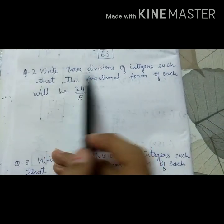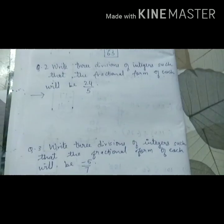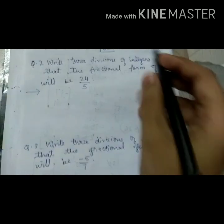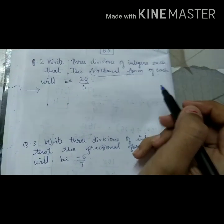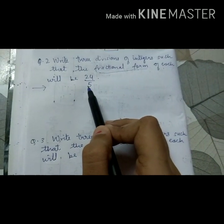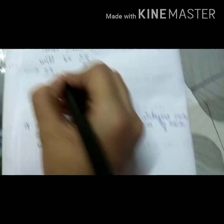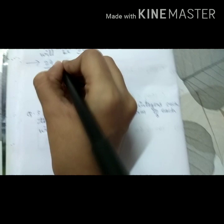Question number 2. Write 3 divisions of integers such that the fractional form of each will be 24 upon 5. Now, question is very big. Keep in mind this word fractional form of each will be 24 upon 5. Means whatever number we are selecting, once we divide those numbers, answer should be 24 upon 5. So now I am taking 24 upon 5. How many we want? 3. So I am writing 24 upon 5 three times.